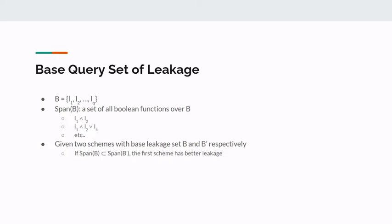To compare leakage, we introduce the notion of a base query set of leakage. Informally, a base query set of leakage is a set of boolean formulae that the adversary can combine to learn volumes of more complex queries. We define the span of the base query set of leakage as the set of all queries for which an adversary can construct the volume from the volumes of queries in the base leakage set. This notion is quite useful for comparing leakages: if the span of one scheme's base set is a strict subset of another's, we can say that scheme has strictly better leakage.